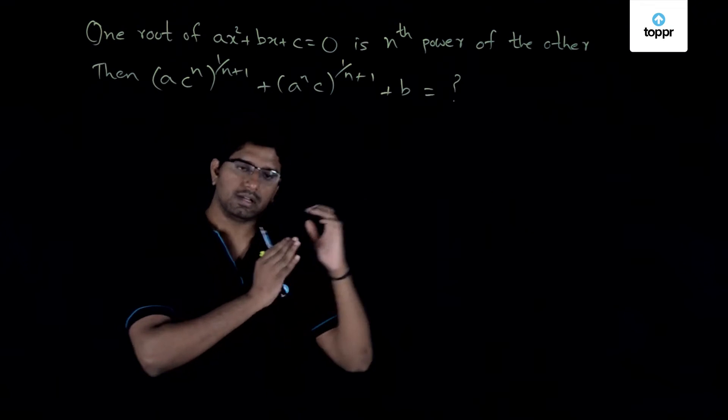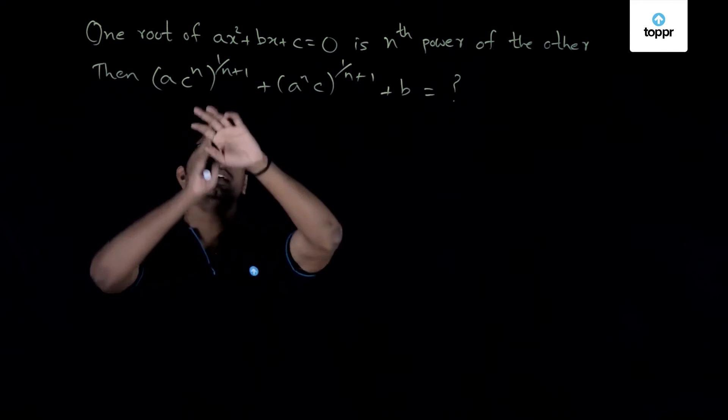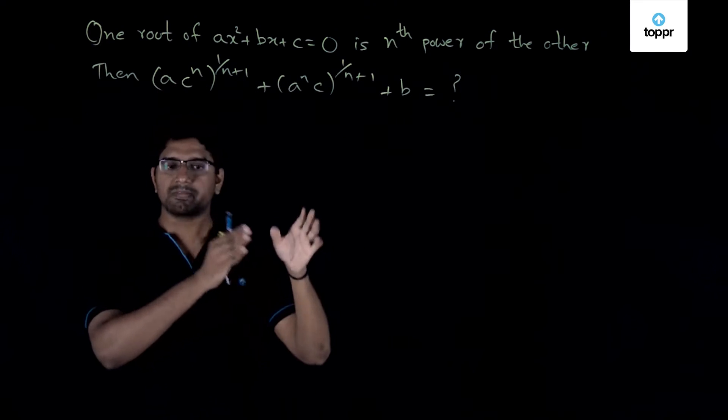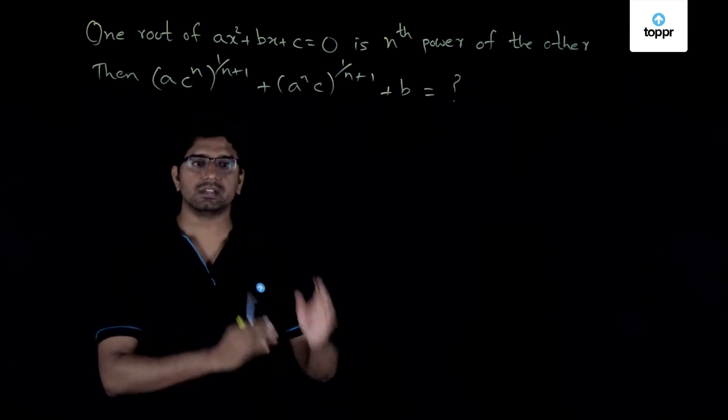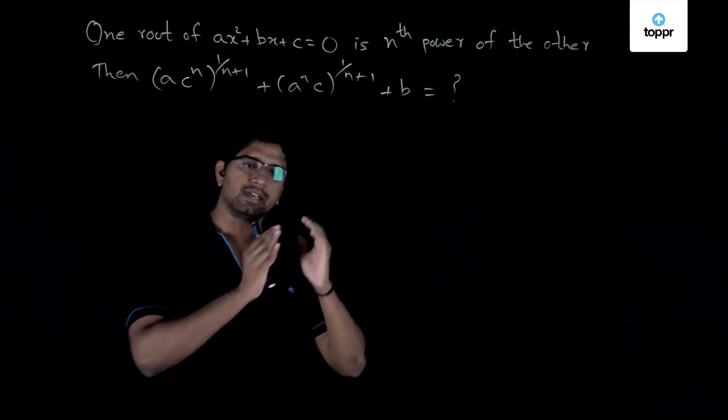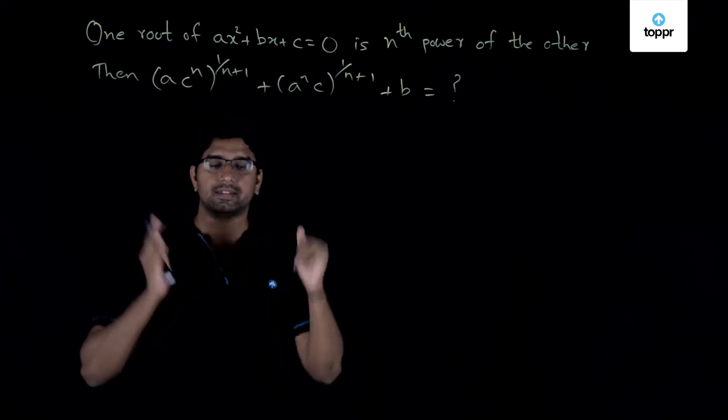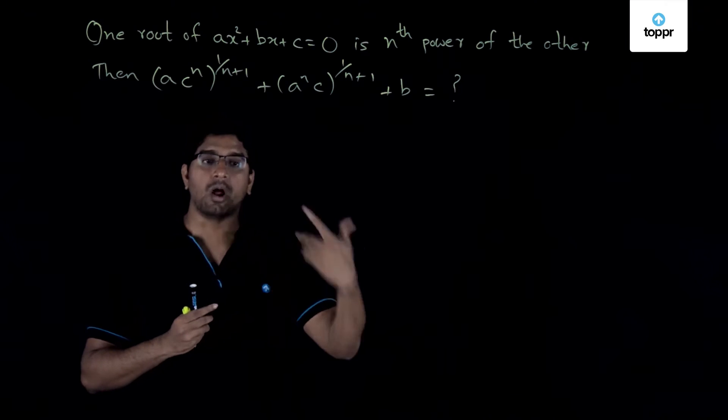Any such problem which puts a constraint on the roots of a quadratic equation and then asks you to evaluate an expression which involves the coefficients, the first thing which you try to do is to actually write down the equations involving the sum of the roots and the product of the roots. That will actually give you an idea about how to go about.